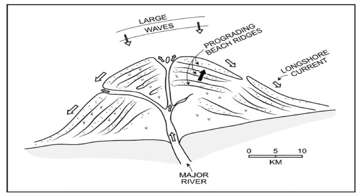Wave-dominated deltas are characterized by the tendency of strong waves altering the sediment under the water. Mouth bar deposits tend to be well sorted under the influence of wave domination. Progradation also happens under the influence of wave-dominated deltas, because sediment is not all transported away from the mouth due to the waves. As a result, mouth bars form as a result of the progradation and are often well developed in wave-dominated deltas.